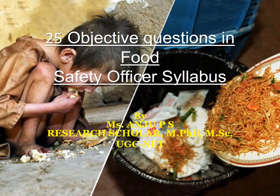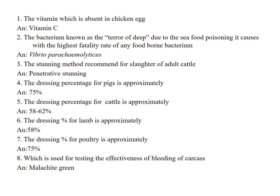Hi friends, in this video I am presenting 25 objective questions in food safety for UPSC syllabus. First question: the vitamin which is absent in chicken is Vitamin C, which is also absent in milk.